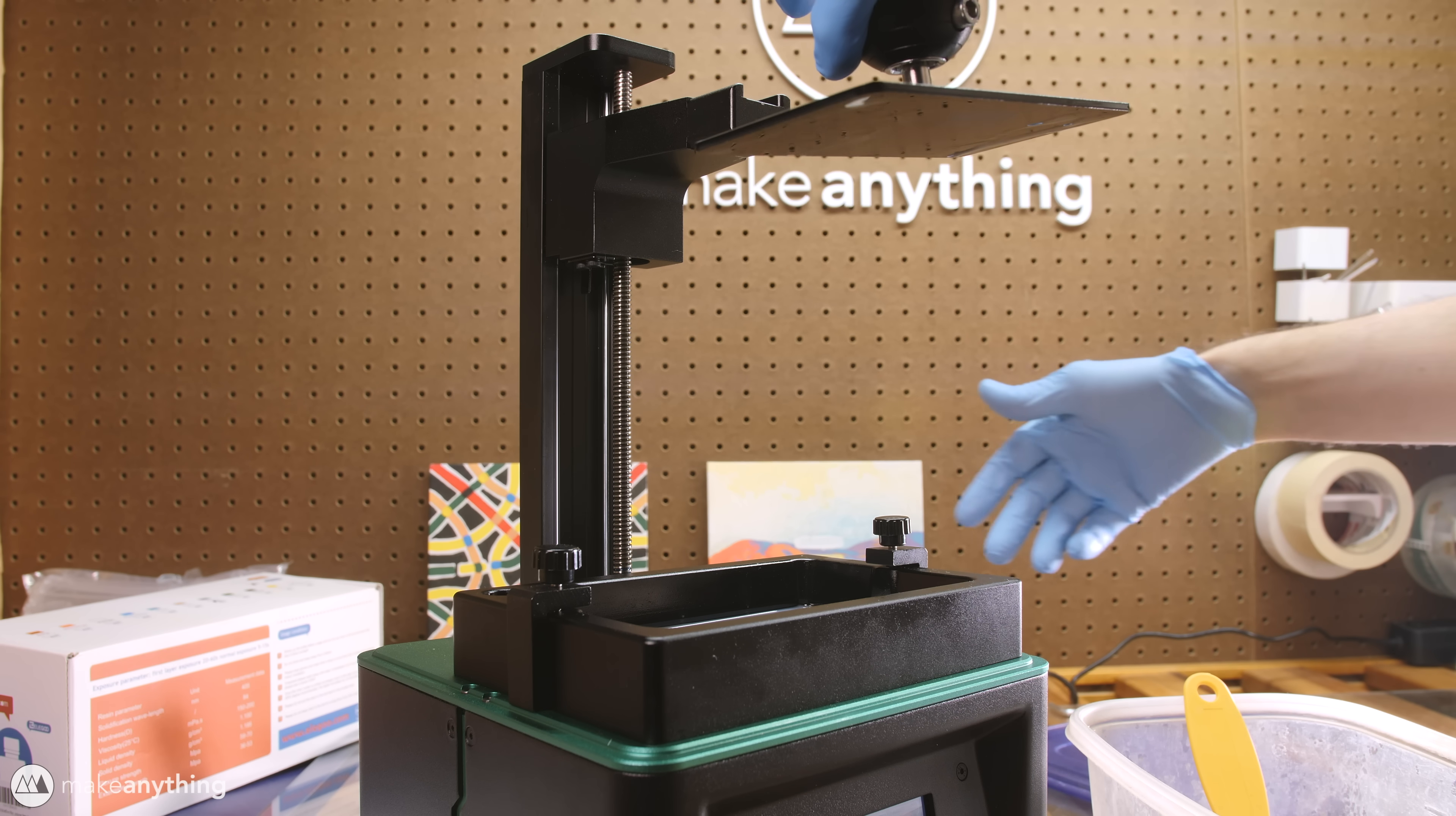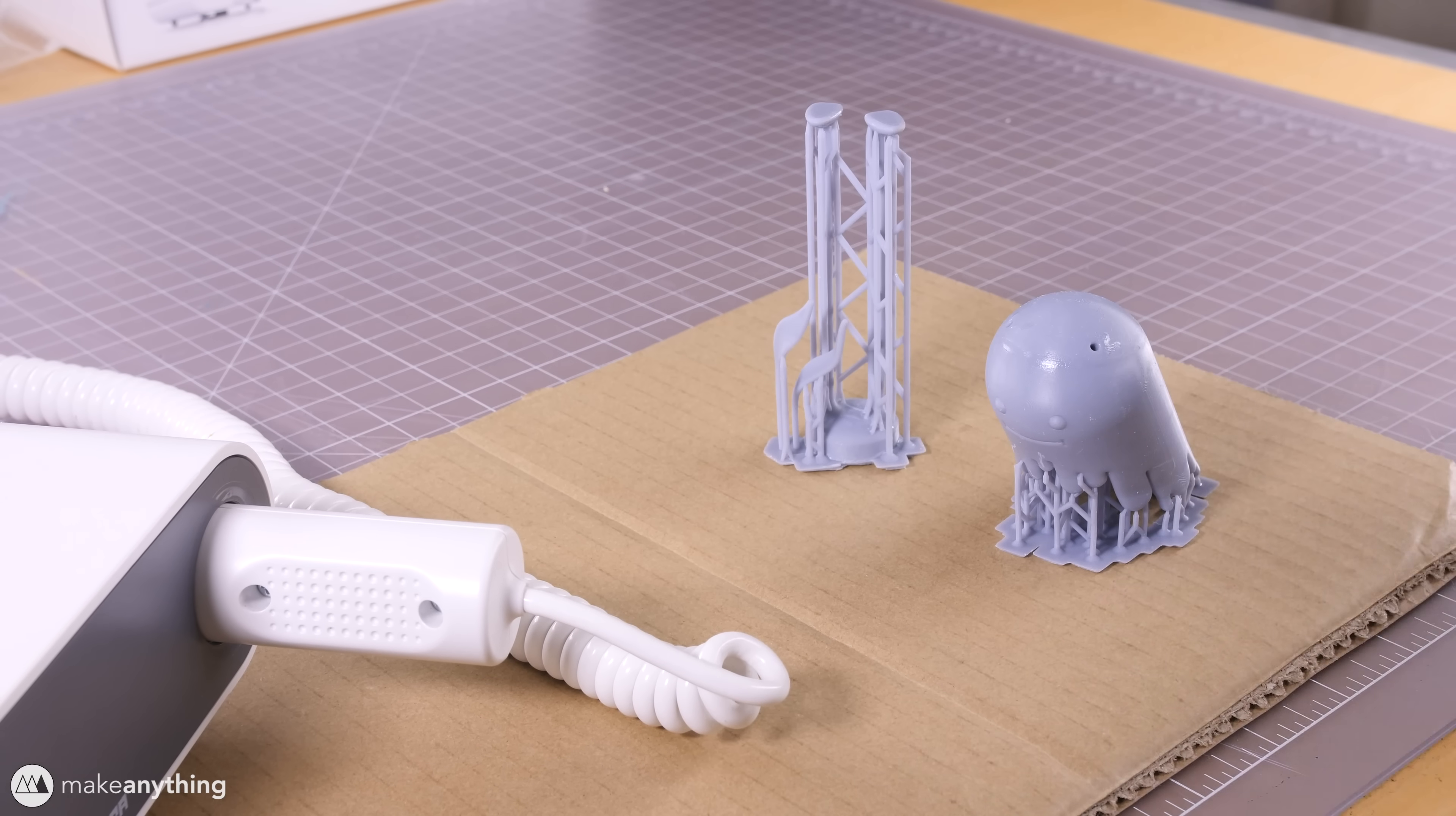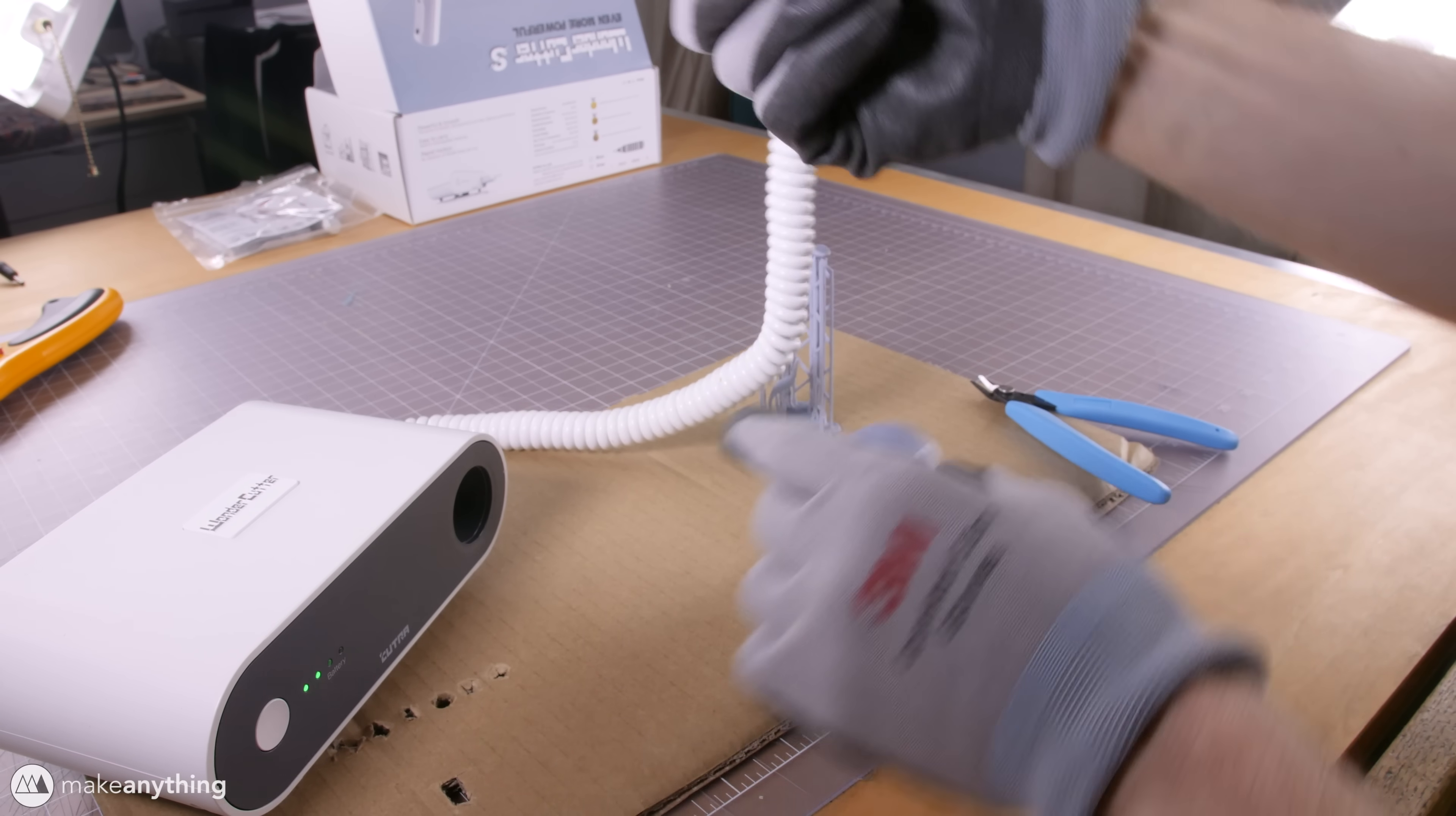For consistent results a lot of people will use a UV curing chamber but I don't have one so I just went ahead and left my models out in the California Sun for a few hours and that did the trick. So now we have our fully cured models but there's still a mess of support material that we have to deal with. And while it's easy enough to clip these off using the flush cutters provided with the Elegoo Mars I decided to go ahead and use my ultrasonic knife just because well I have an ultrasonic knife.